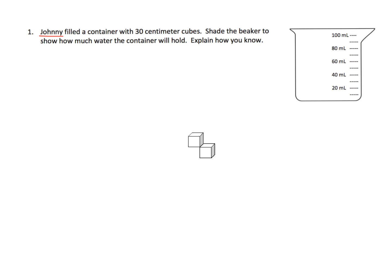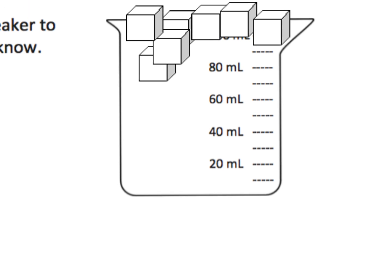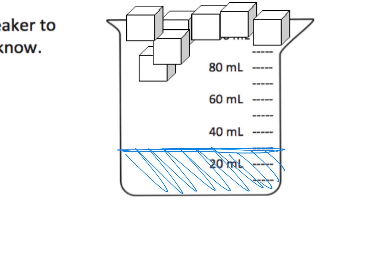The directions say Johnny filled a container with 30 centimeter cubes. Shade the beaker to show how much water the container will hold. So you've got a bunch of these little cubic centimeters—30 of them. If we take all of these cubes and fill them into this beaker, how high would that amount of water go? We're told it's 30. I see 20, I see 40, so 30 is right in between, right here. This is how high